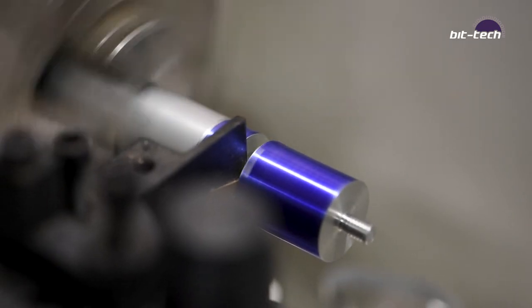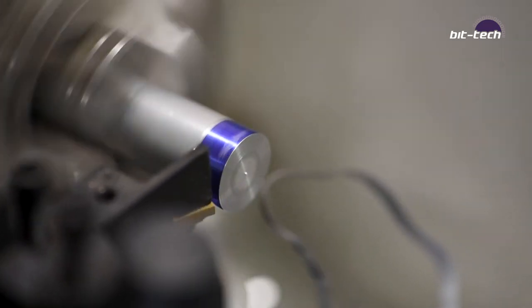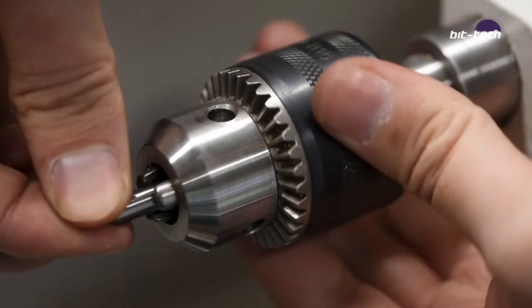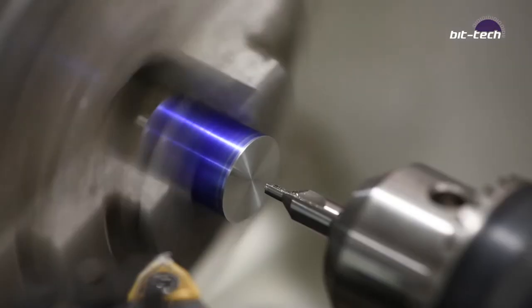After parting the spacer from the main rod I mounted it back into the chuck and used a center drill followed by a 3.5 millimeter twist drill to push 13 millimeters into the piece.